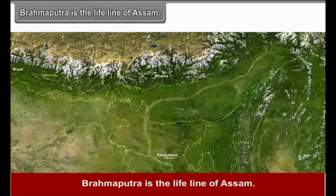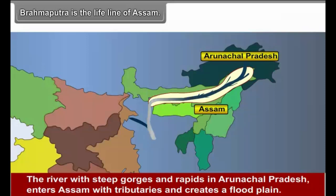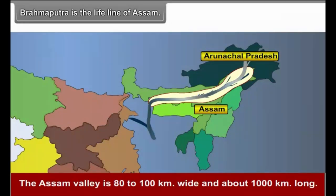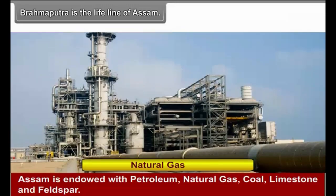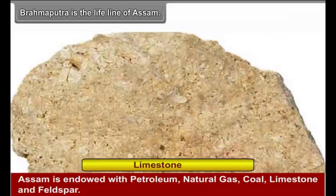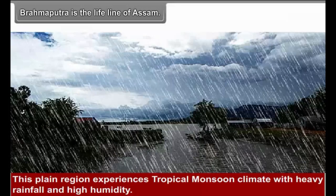Brahmaputra is the lifeline of Assam. The river with steep gorges and rapids in Arunachal Pradesh enters Assam with tributaries and creates a flood plain. The Assam Valley is 80 to 100 km wide and about 1000 km long. Assam is endowed with petroleum, natural gas, coal, limestone and feldspar. This plain region experiences a tropical monsoon climate with heavy rainfall and high humidity. Thunderstorms are frequent during afternoons.